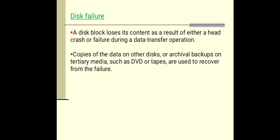Next is disk failure. A disk block loses its content as a result of either a head crash or a failure during the data transfer operation. When the head is crashed or there is a failure during the data transfer operation, the disk block may lose its content. Copies of data on other disks or archival backups on tertiary media such as DVDs or tapes are used to recover from this failure. If we have taken a backup of the database on secondary storage like DVDs or tapes, it is possible to recover the lost data.